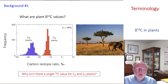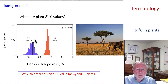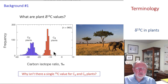Background slide number one: what are typically observed plant carbon isotope ratio values? The diagram here shows the range for C4 plants and the range for C3 plants. You might ask yourself, why isn't there a single value? Is it possible that there's not much precision in the measurements? The answer is that there are evolutionary, environmental, and genetic reasons to explain this variation.